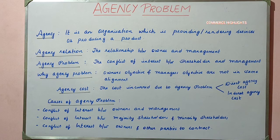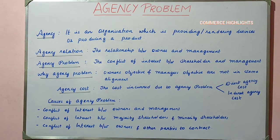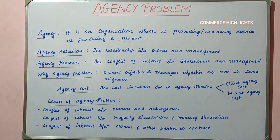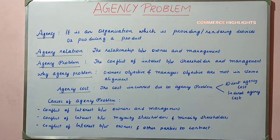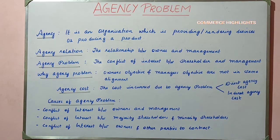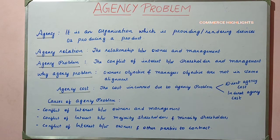Now the question is: why does agency problem occur? The owners always aim for profit and return on investment, whereas the management always aims for high benefits and incentives. So when there is a conflict of interest between the manager's objective and the shareholder's objective, it leads to a problem termed as agency problem.